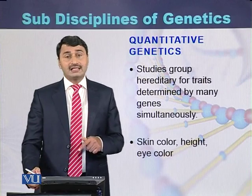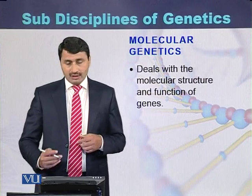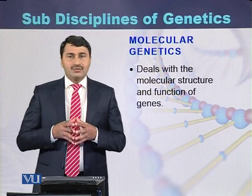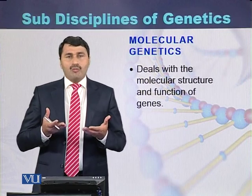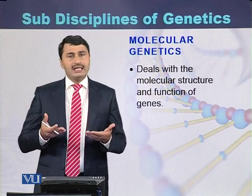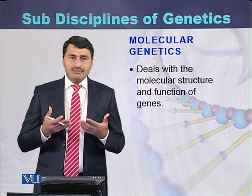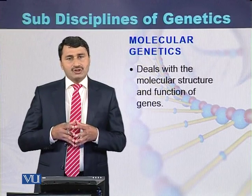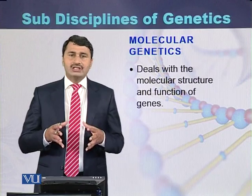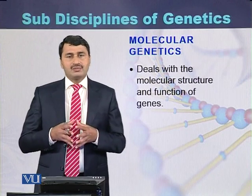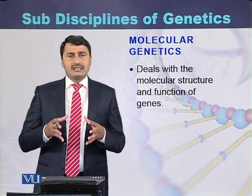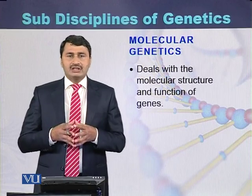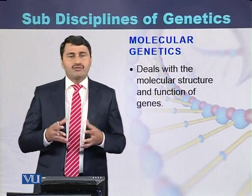The fourth and last type is molecular genetics. If we study genetics at the level of molecules — at the level of DNA or RNA — or if we identify certain mutations or the sequence of DNA, then this type of genetics is called molecular genetics. These are the four major sub-disciplines of genetics, though some geneticists classify genetics into more than four sub-disciplines.